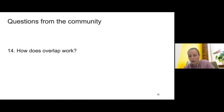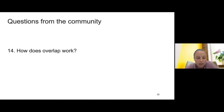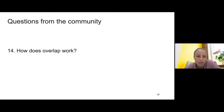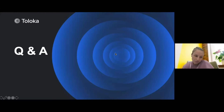Last community question: how does overlap work? Overlap means that several people do the same task. For example, an overlap of 5 means the same task is completed by 5 different performers. This is used because not all individual answers in Toloka can be fully trusted. To ensure quality you give the same task to multiple people and use aggregation techniques like majority voting to determine the correct answer.